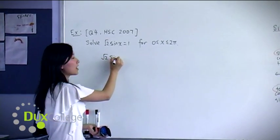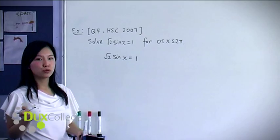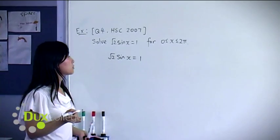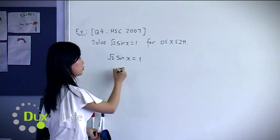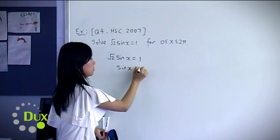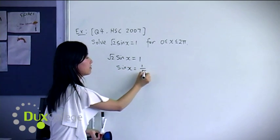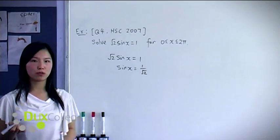So we have root 2 sine x equals 1. The first thing you would do is make sine x the subject, so you need to divide both sides by root 2. So you will have sine x equals 1 over root 2.